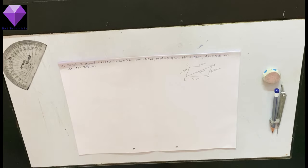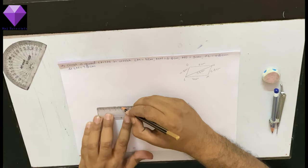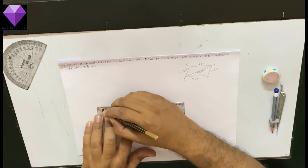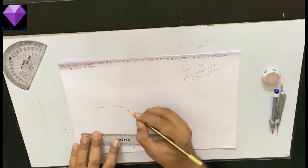The first figure we did with the diagonal as the base, now I am taking LM as the base, 4 cm. So first I am drawing a line segment of 4 cm, giving the name LM.